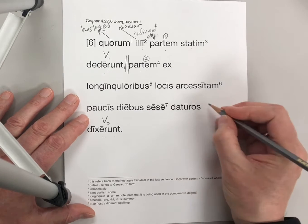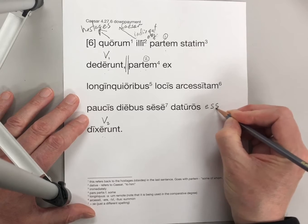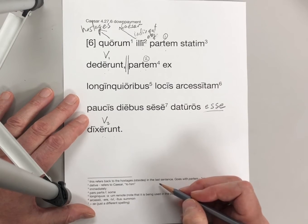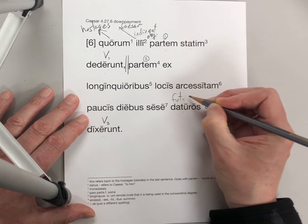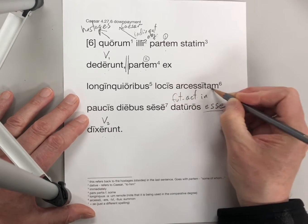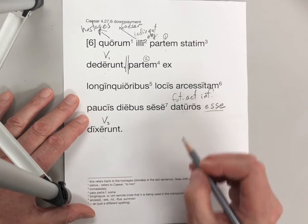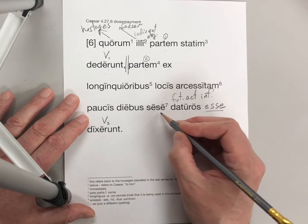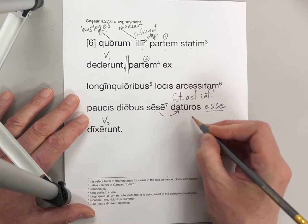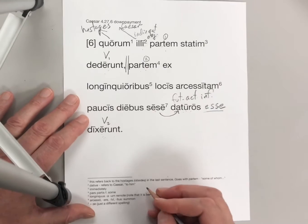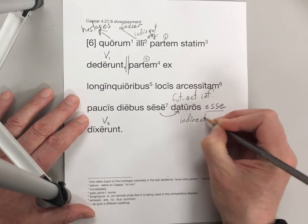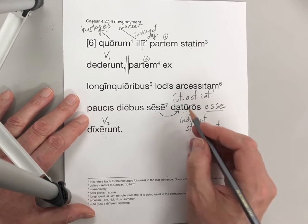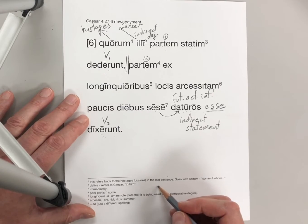Daturos — they would give. Here you have to understand esse. As often happens, the infinitive is lacking that verb 'to be' in the infinitive. This is the future active infinitive. They said they would give — part of them. And 'se' is the subject of the infinitive: subject accusative, verb infinitive, because this is an indirect statement. You get complementary infinitives, but you also have infinitives in indirect statement, just like that.